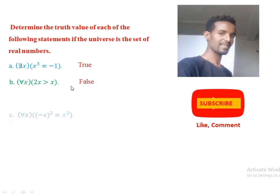Statement (c): for every x, (-x)² equals x². Since x is a real number, if x is a real number then minus x squared equals x squared.